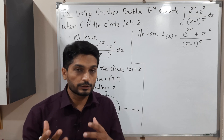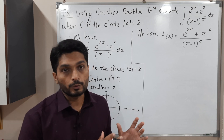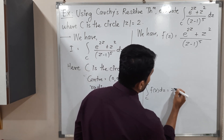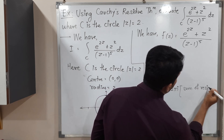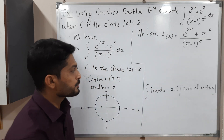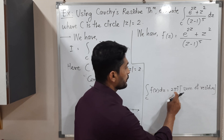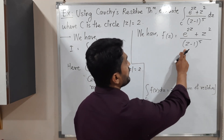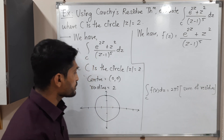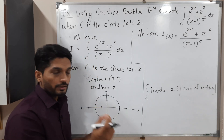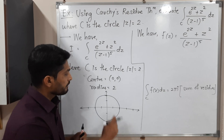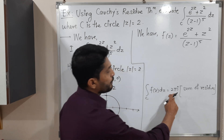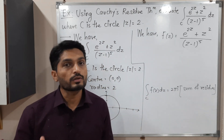We have to find the value of the integral with the help of Cauchy's residue theorem. The statement of Cauchy's residue theorem is: the integration over C of F(Z) dZ equals 2πi times the sum of residues. So we first find the points where the function is not analytic — where the denominator is zero. We check whether those points lie inside or outside the circle. If inside, we find the residue there; if outside, no residue needed. We sum all residues, multiply by 2πi, and get the value of the integration.